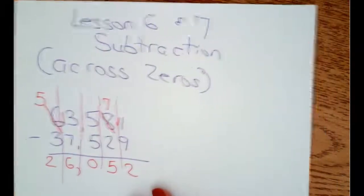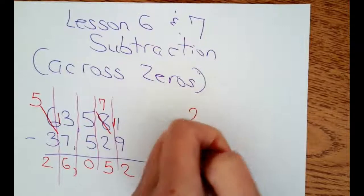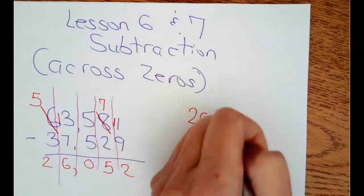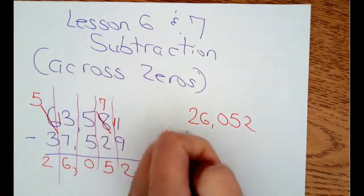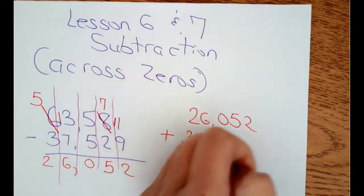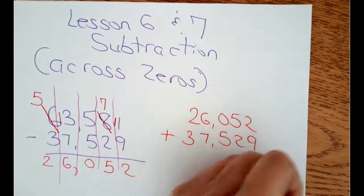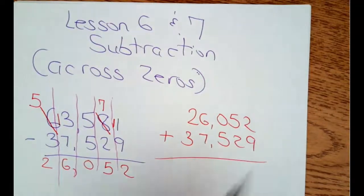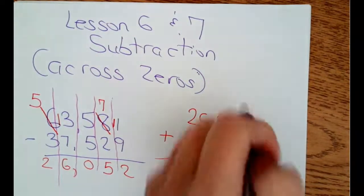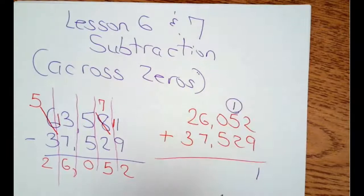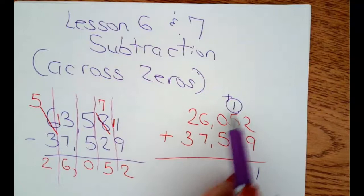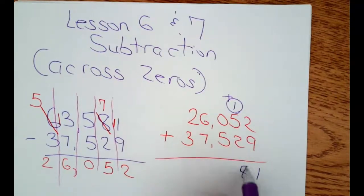How do I make sure it's right? You do the opposite. So I take the 26,052. I'm going to add it to 37,529. So let's see if I'm right. Two plus nine is eleven. We know you can only put one digit in one's place value. Circle it. Don't forget it. I have five plus one is six, plus two is eight. Zero plus five is five.